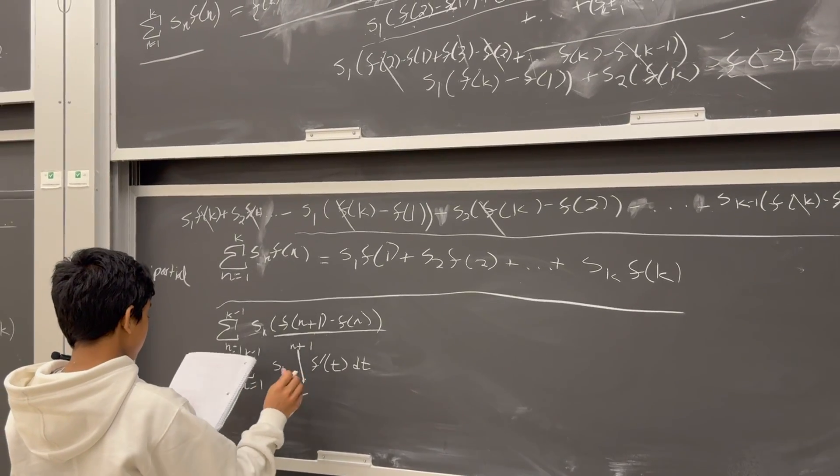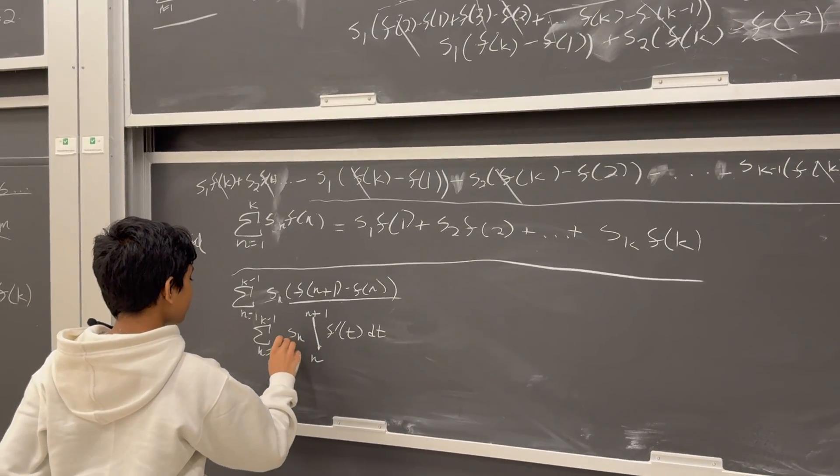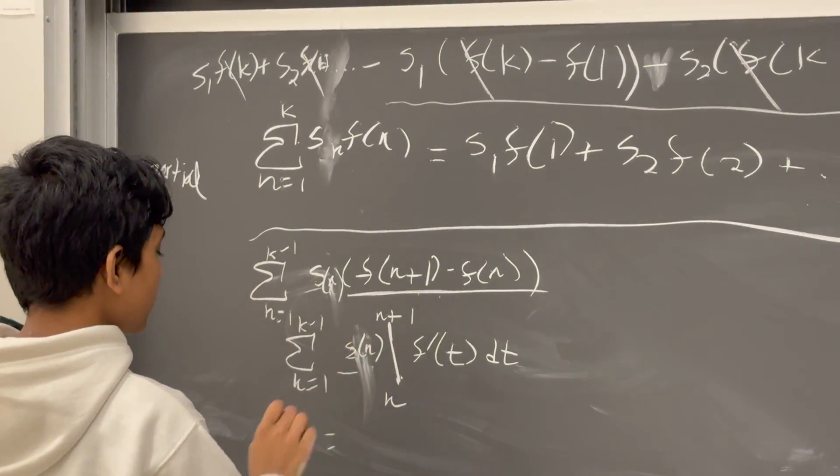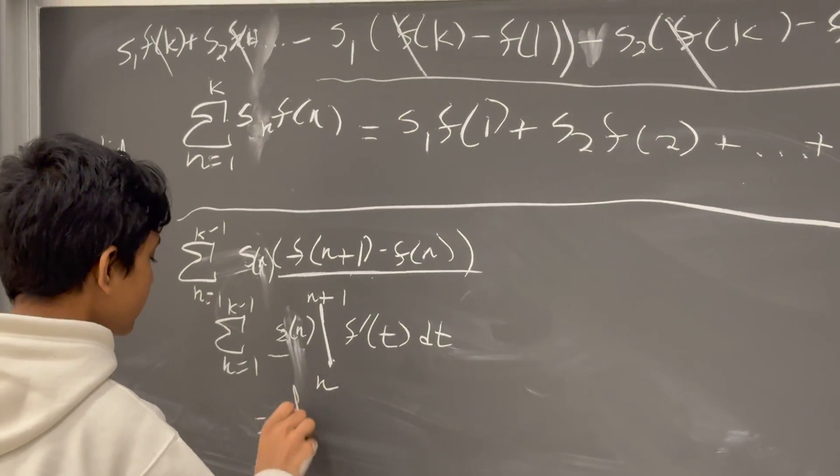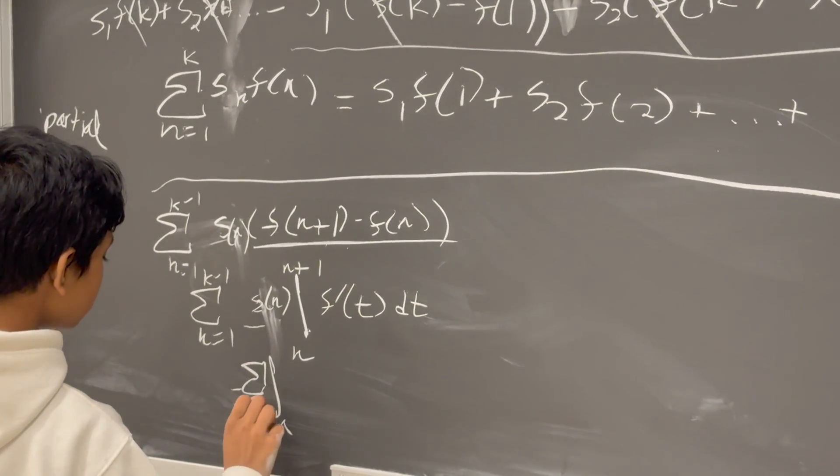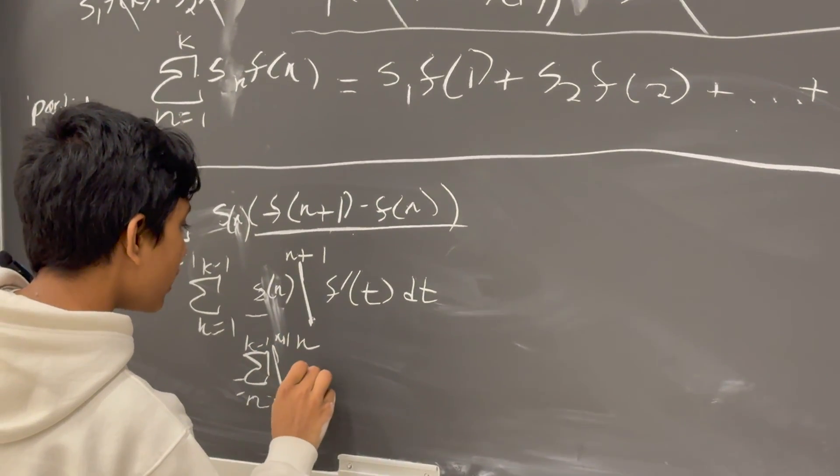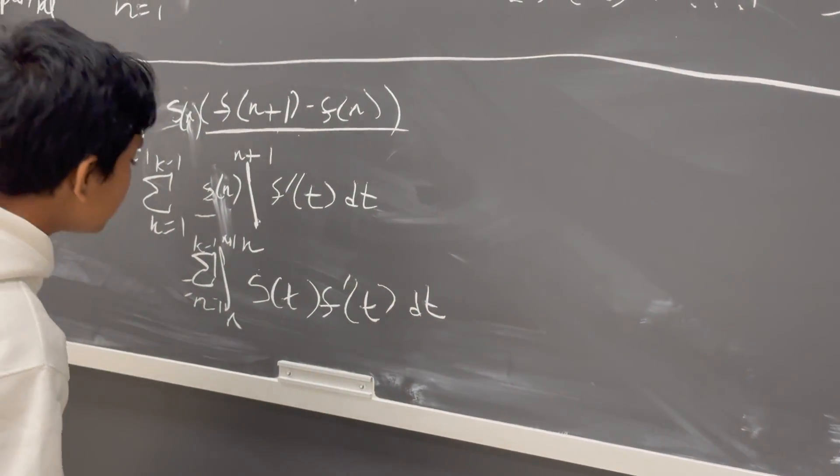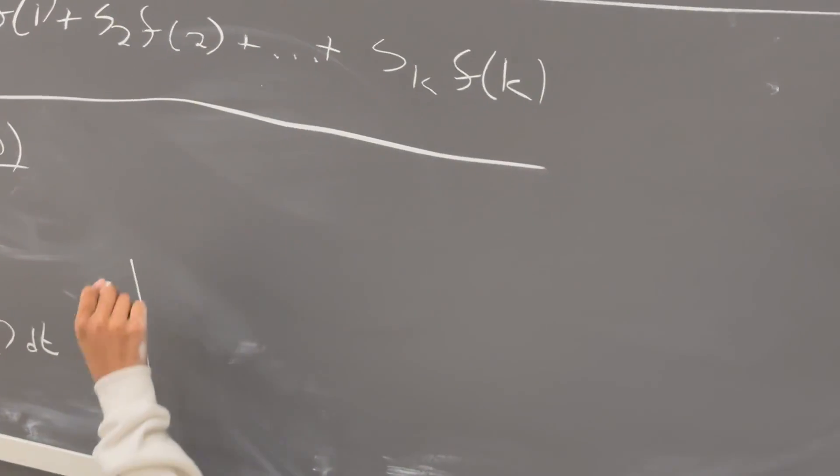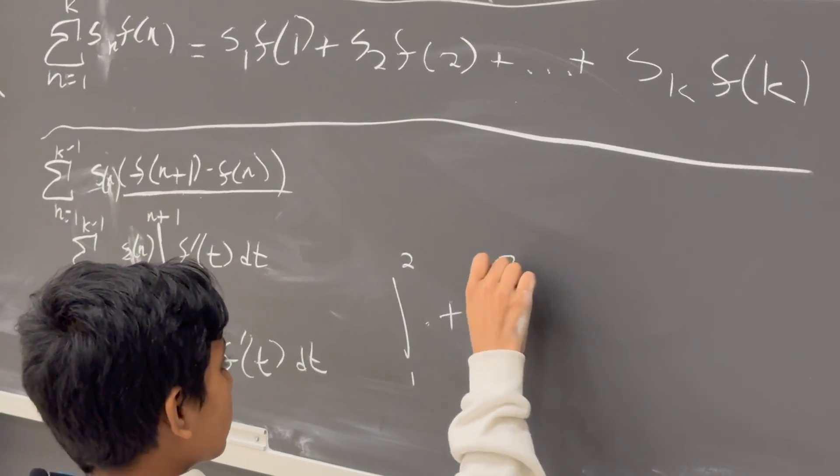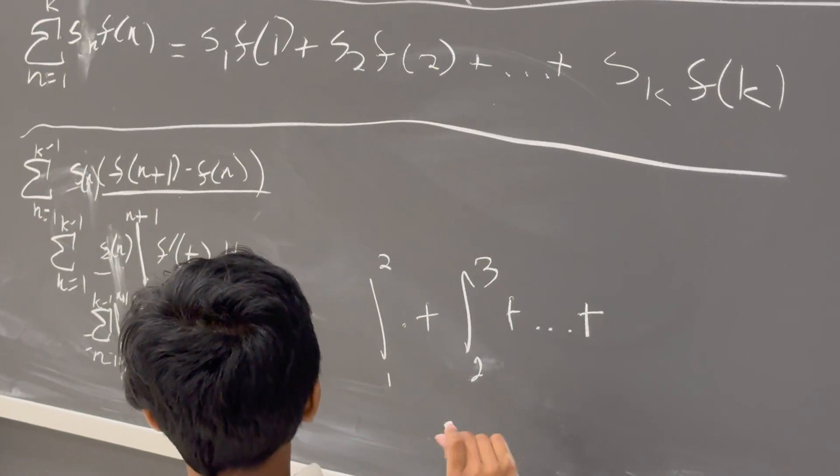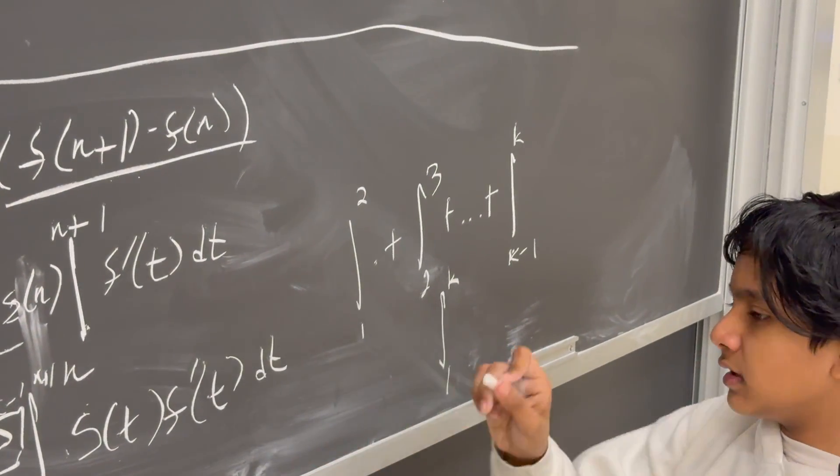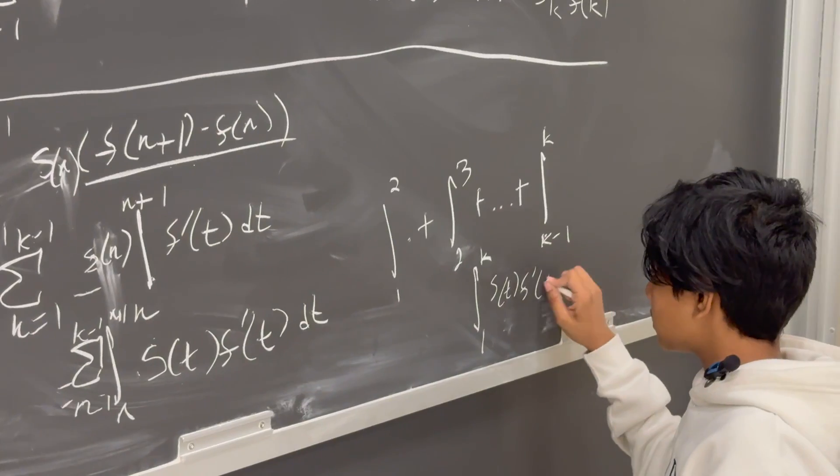It'd be pretty easy to see how that is. That tells us that we essentially have the sum on the outskirts from N to N+1 of S(T) F'(T) dT. So, it shouldn't be too hard to see that this is just going to be the integral from 1 to 2 of that thing, then the integral from 2 to 3 of that thing, all the way until the integral from K-1 to K of that thing. So, it's just the integral from 1 to K of S(T) F'(T).